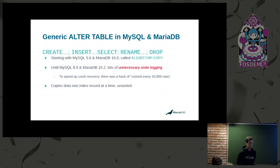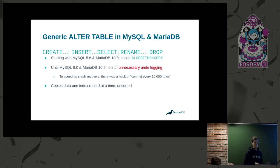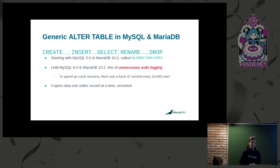In the beginning there was only this generic form of ALTER TABLE, which would internally create a new table corresponding to the requested change in table definition, and then copy all the rows one by one from the old table to the new table. Finally it would rename the old table to a temporary name, rename the intermediate copy to the original name, and drop the original table. Starting with MySQL 5.6 and MariaDB 10.0, this fallback mechanism is called algorithm equals copy.